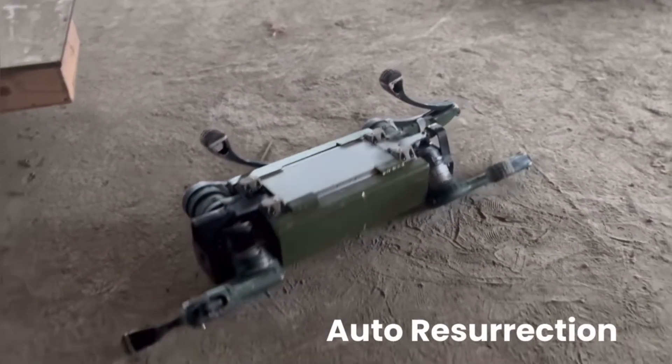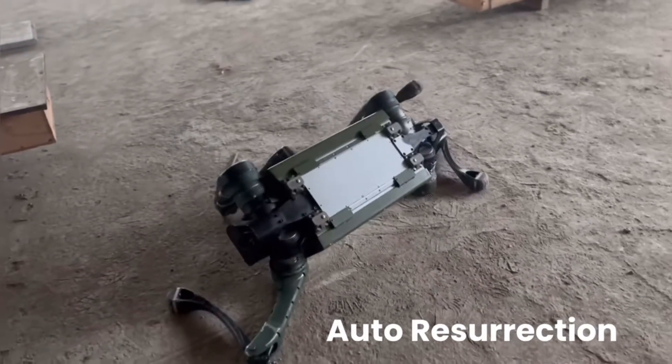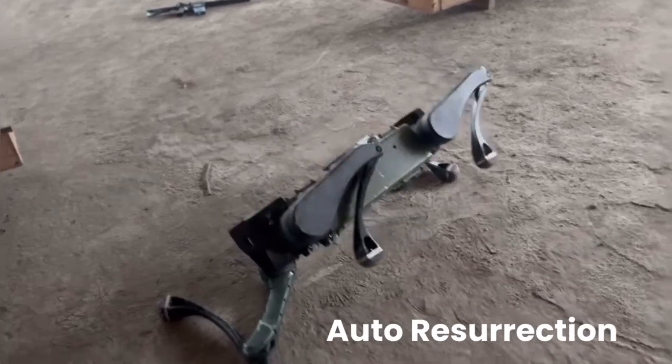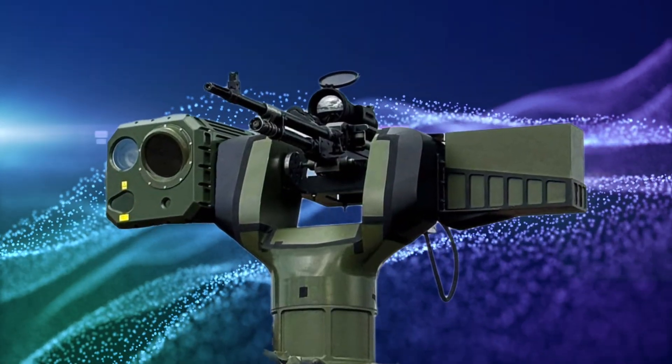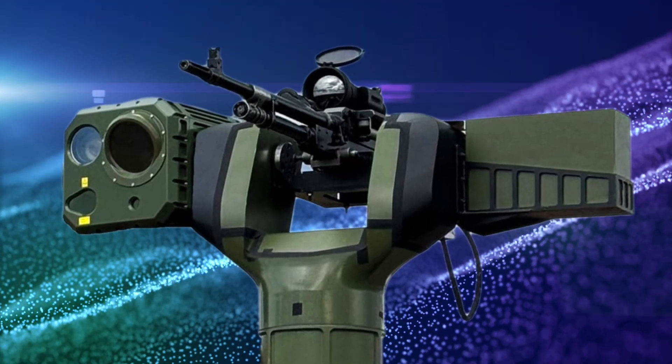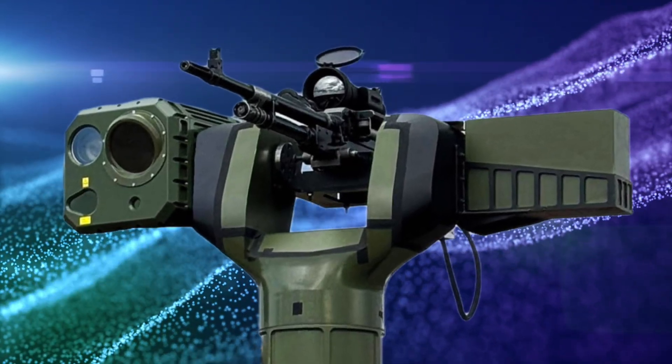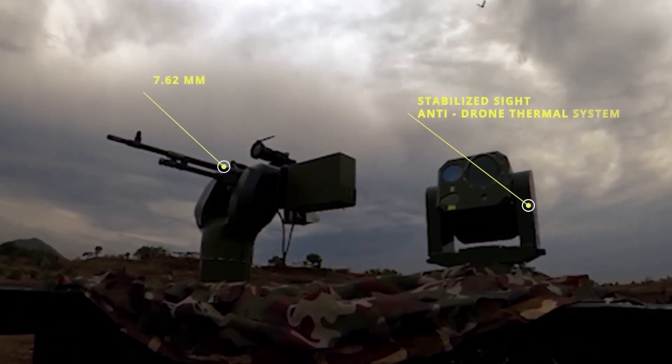And if it gets knocked over, then no big deal. It gets right back up on its own. They're calling this an auto-resurrection. Dramatic? Maybe. Impressive? Absolutely. But that's not all Zen is working on. They've also come out with something called the Barbaric UR CWS, which is basically a super lightweight, remote-controlled weapon station. And it's not just for land. They say it can be used on ships too.